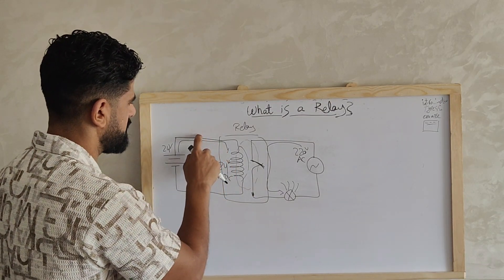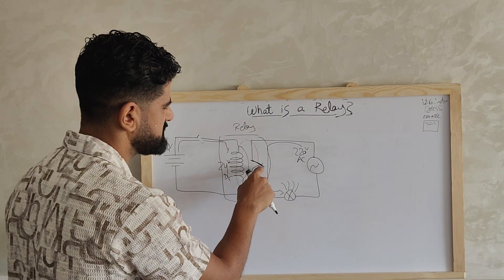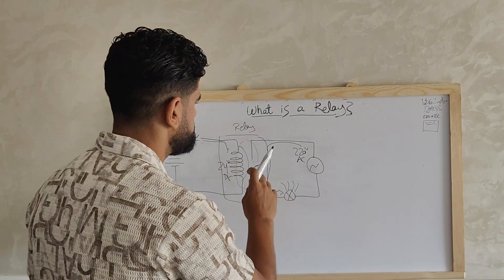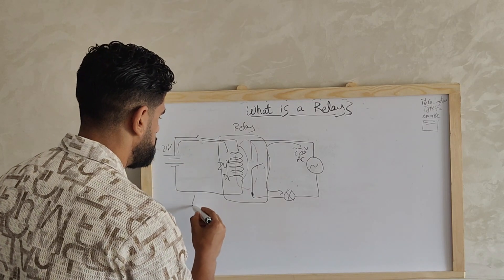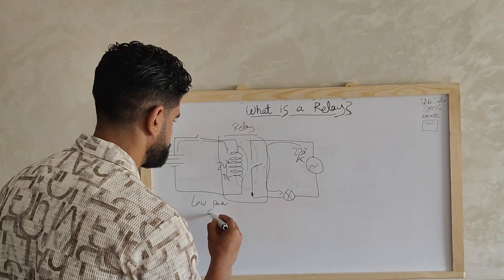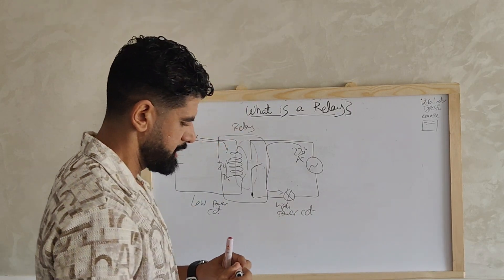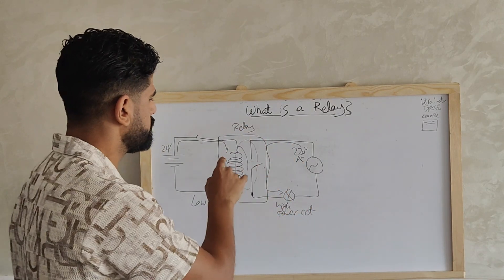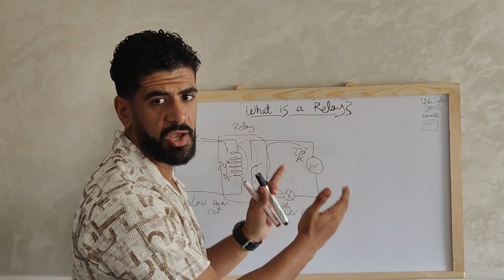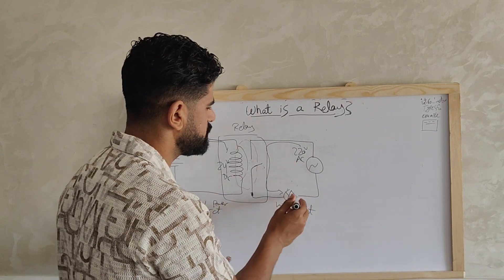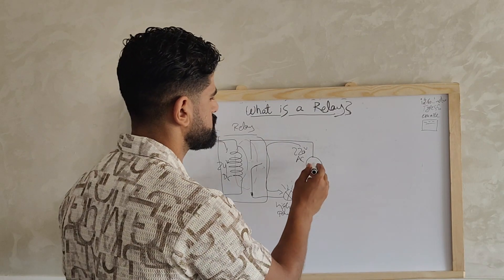Now let's open this switch again — the circuit will not have any energy, so the coil will stop supporting this switch and the switch will be open again, so the lamp will not be illuminated anymore. So now we have two circuits: a low power circuit and a high power circuit. This circuit needs just a small amount of power to energize the coil, so it's a low power circuit. But here we have a high power circuit because it needs more energy to let this lamp illuminate, or if we have a motor to make it rotate.